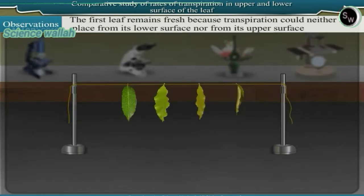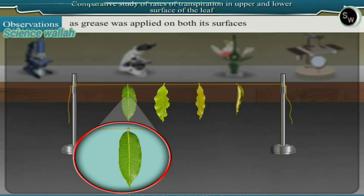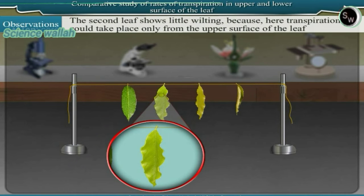The first leaf remains fresh because transpiration could neither take place from its lower surface nor from its upper surface as grease was applied on both its surfaces. The second leaf shows little wilting because here transpiration could take place only from the upper surface of the leaf.